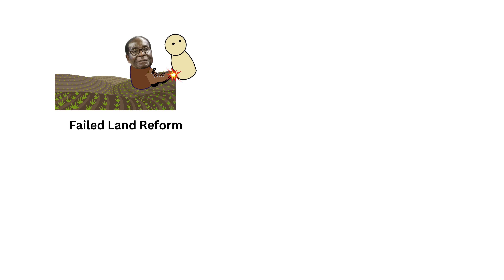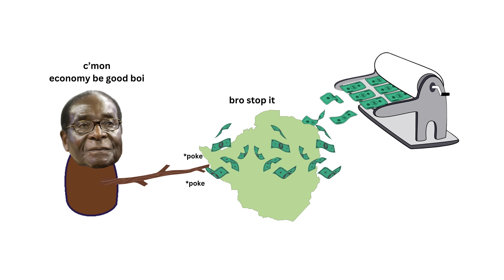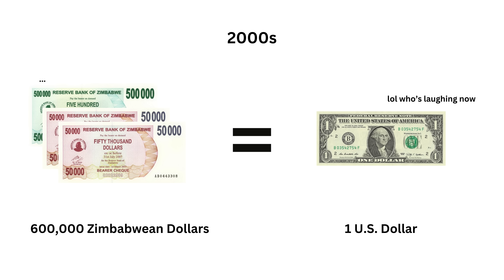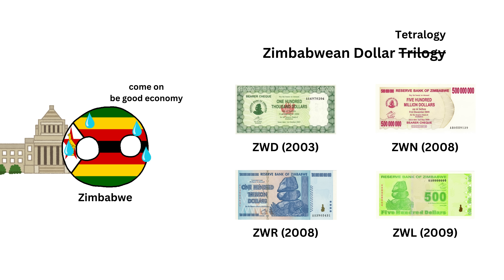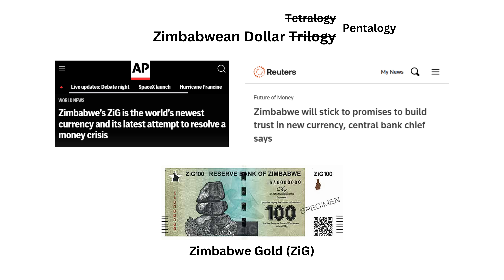But due to their failed land reform, economic problems, corruption, international sanctions, and printing money mindlessly, the value of the Zimbabwean dollar dropped dramatically. By the 2000s, one U.S. dollar was equal to almost 600,000 Zimbabwean dollars. The government tried to fix it by changing the currency several times. But in the end, they gave up and started using more stable foreign currencies, like the U.S. dollar and the South African rand. Even though the latest news is Zimbabwe trying to get back their original currency.